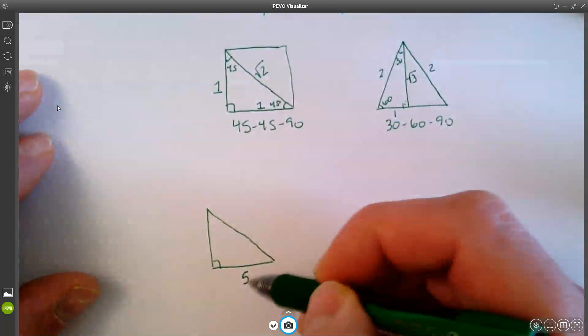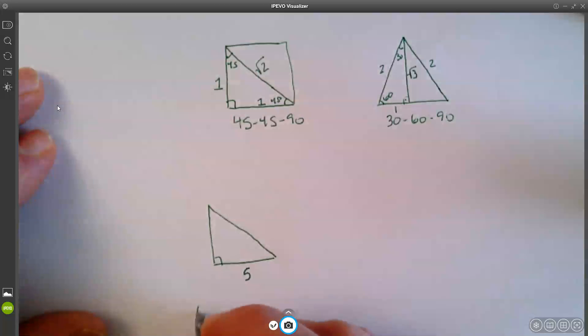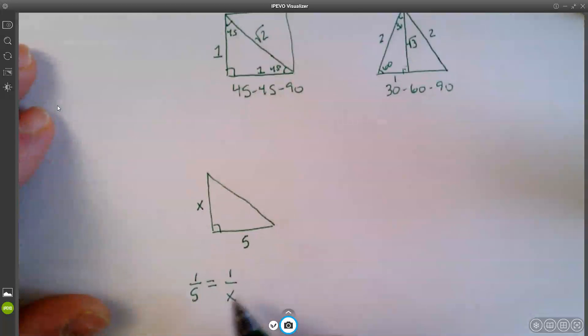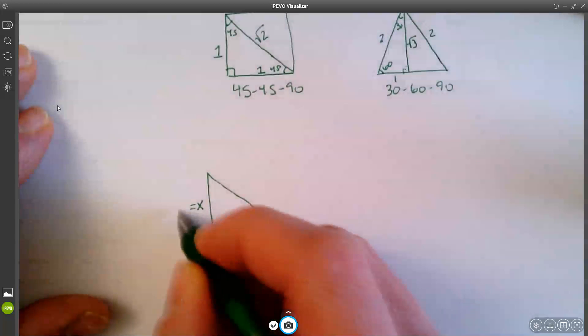1 to 5 should be the same as 1 to x, right? You want to figure out what x is over here. Well, I could cross multiply and all, but it should be clear that x has to be a 5 for this to be true. So x equals 5.